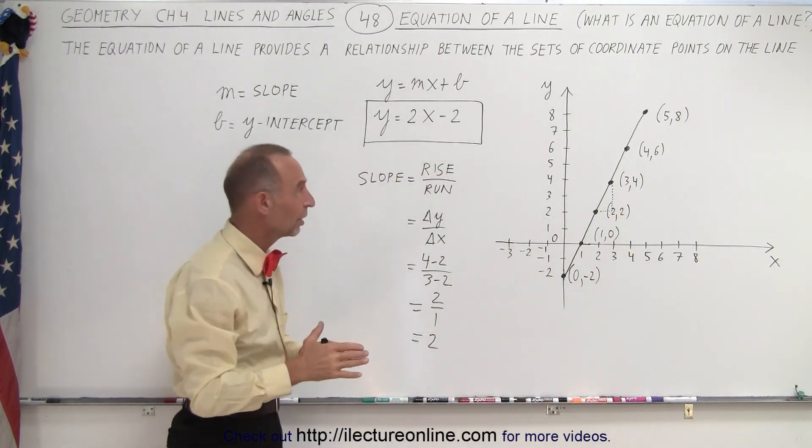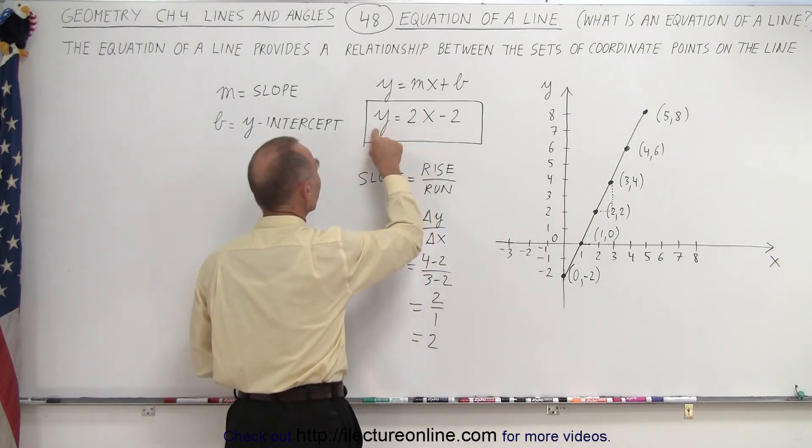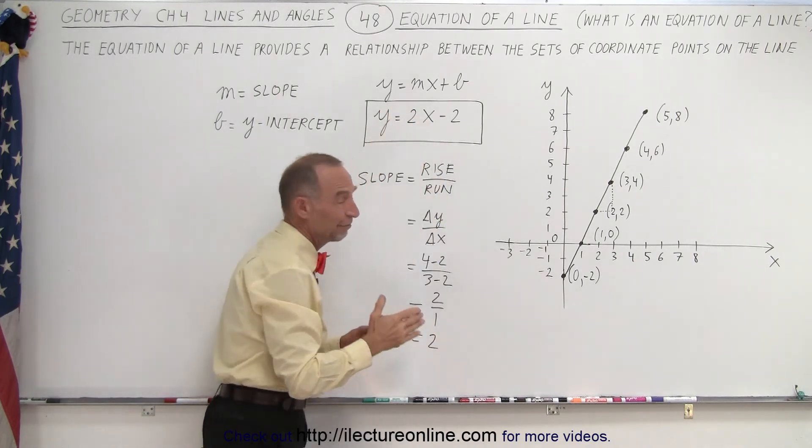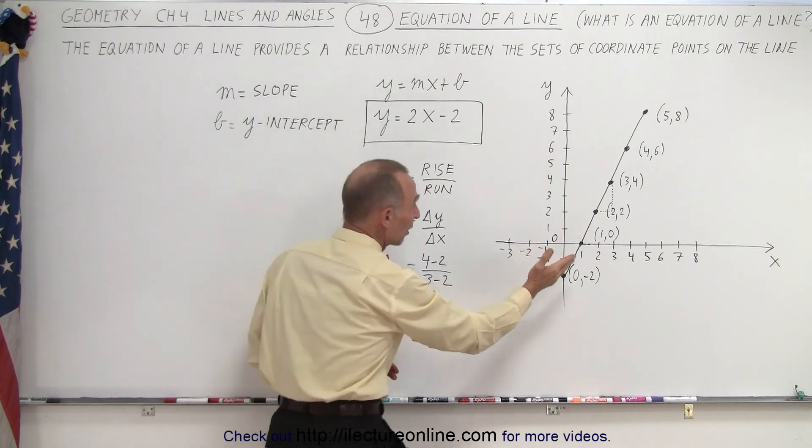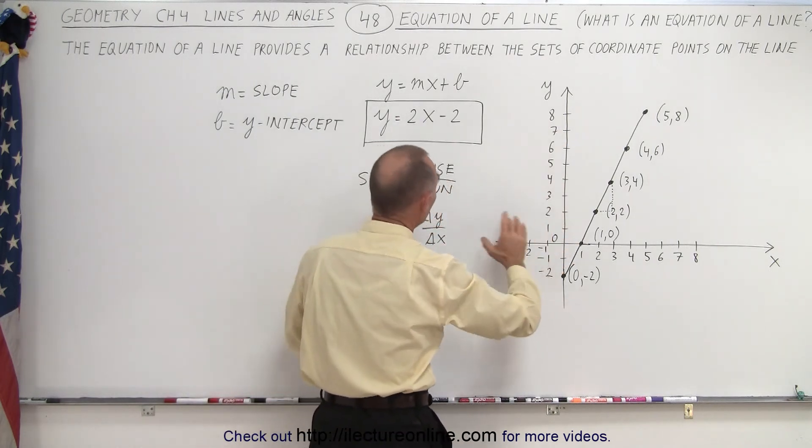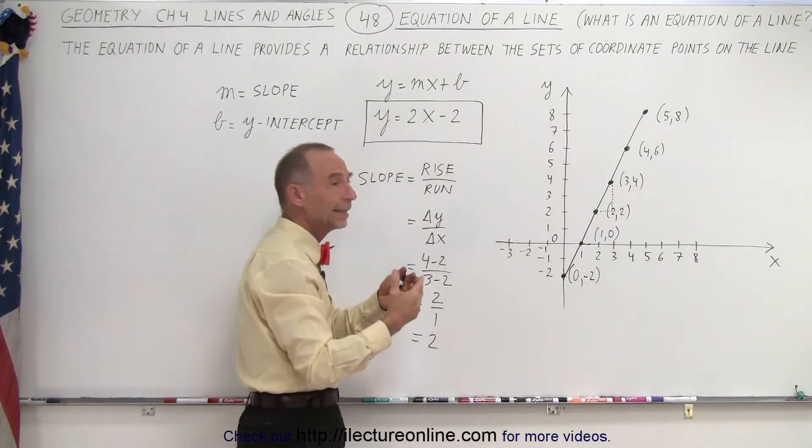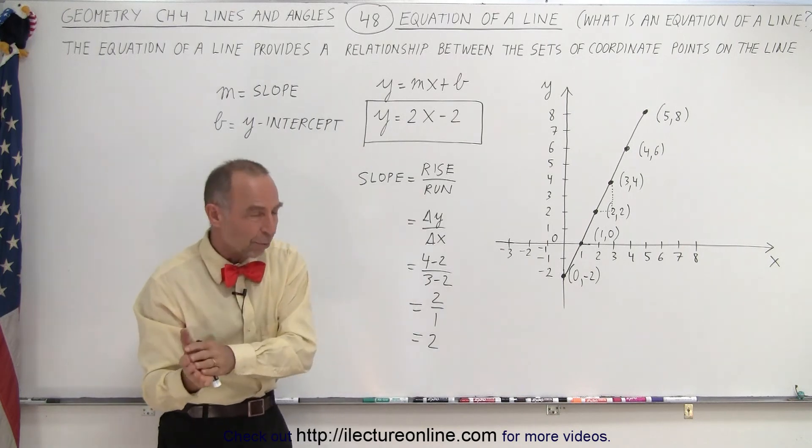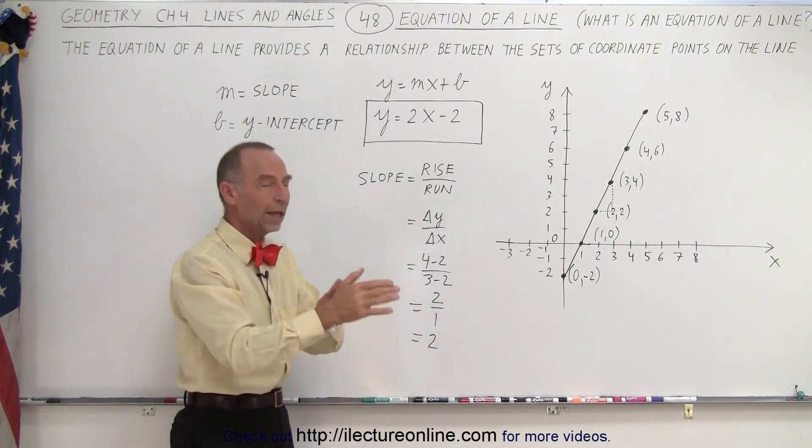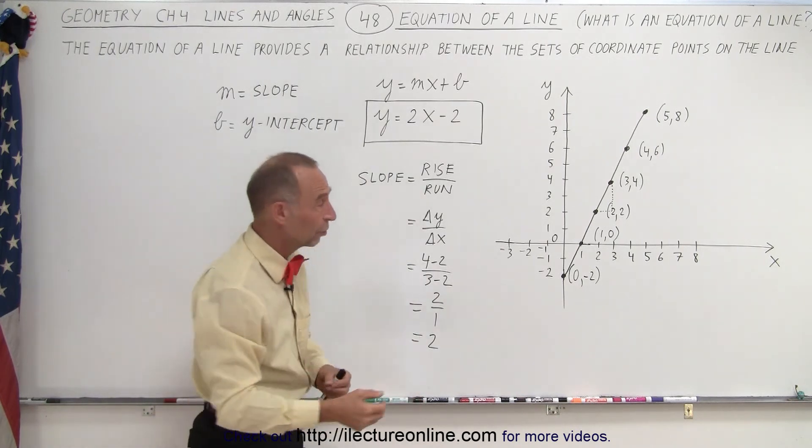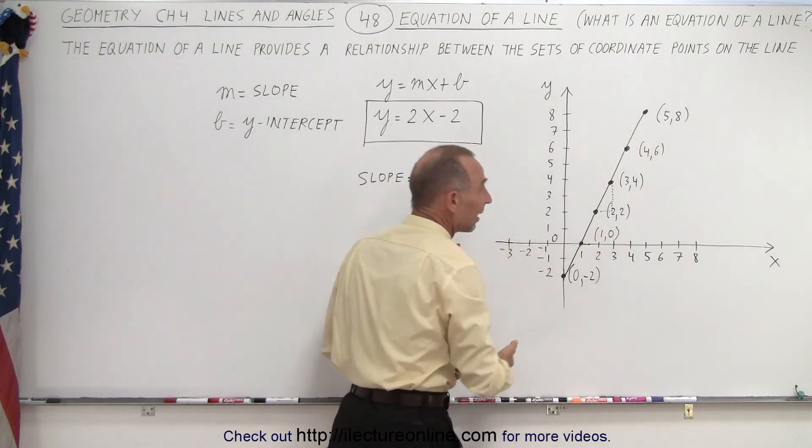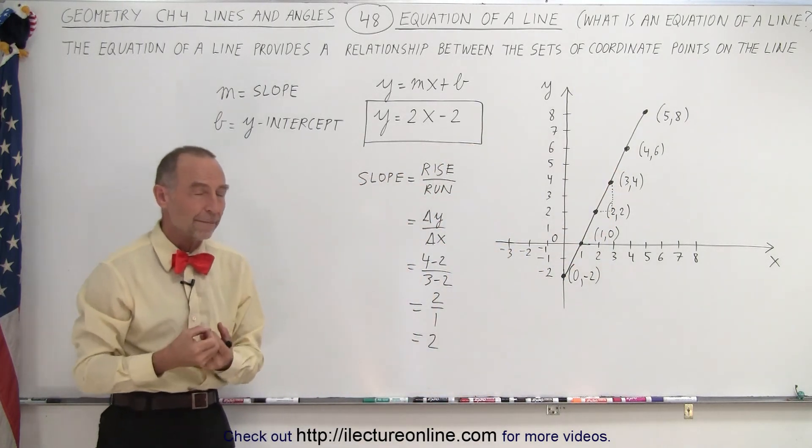So there's the equation that will give you a value for y for any given value for x. If the equation looks different, if you move the equation up or down and you change the slope, you'll have a different equation. Again, that equation will give the relation between all the x values and all the y values of the coordinates of any one of the points on the line. So that's what we mean by the equation of a line.